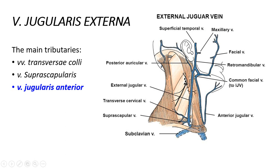Regarding the tributaries of the vena jugularis externa: this vein is superficial and receives superficial tributaries. The vena transversa colli drains the superficial muscles of the back and also the deep muscles of the neck, accompanying the same-name artery. Similarly, the vena suprascapularis accompanies the artery and drains the muscles of the scapular region.